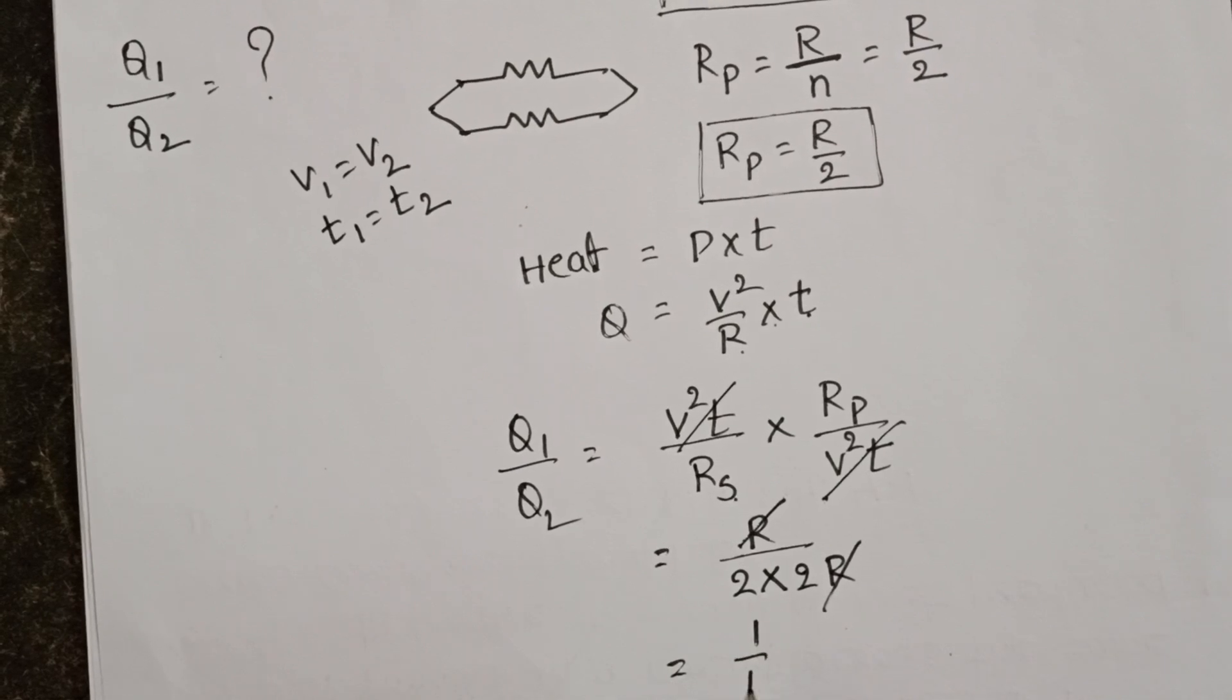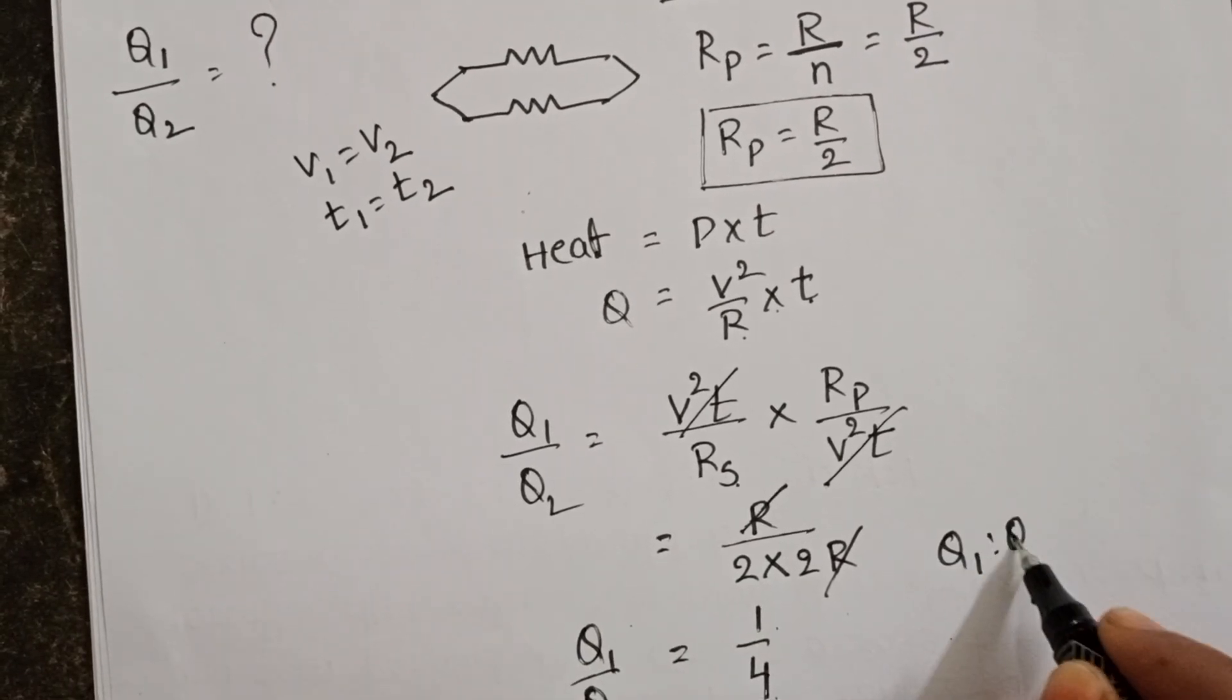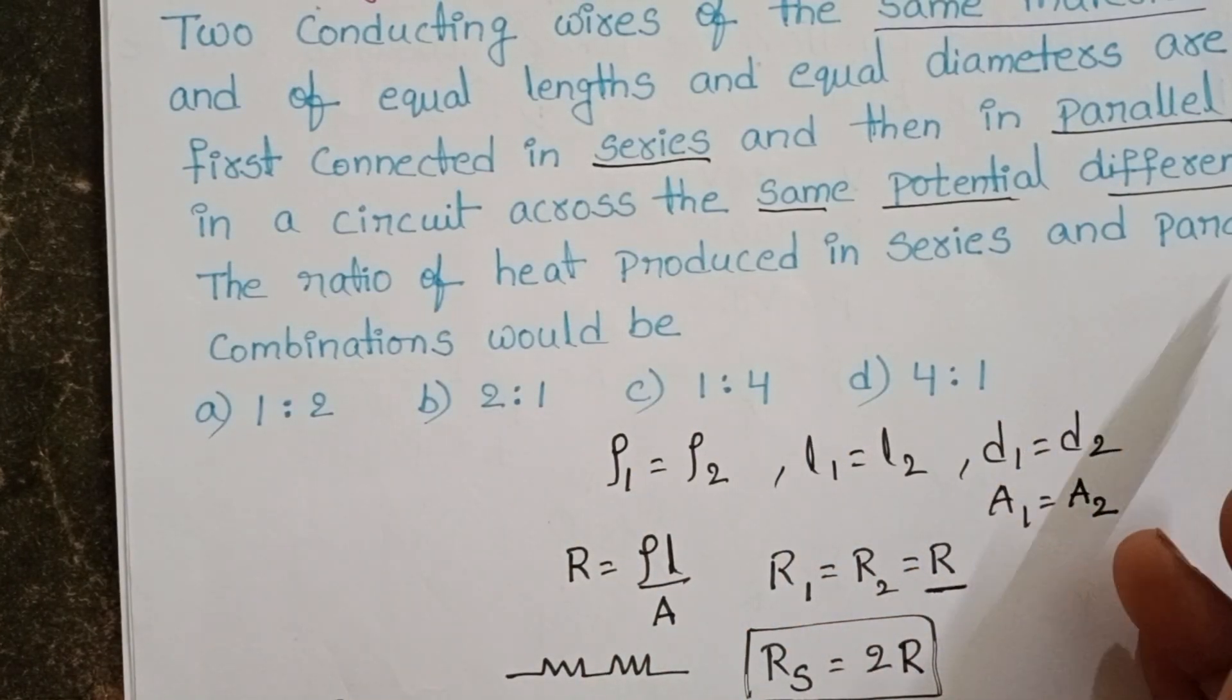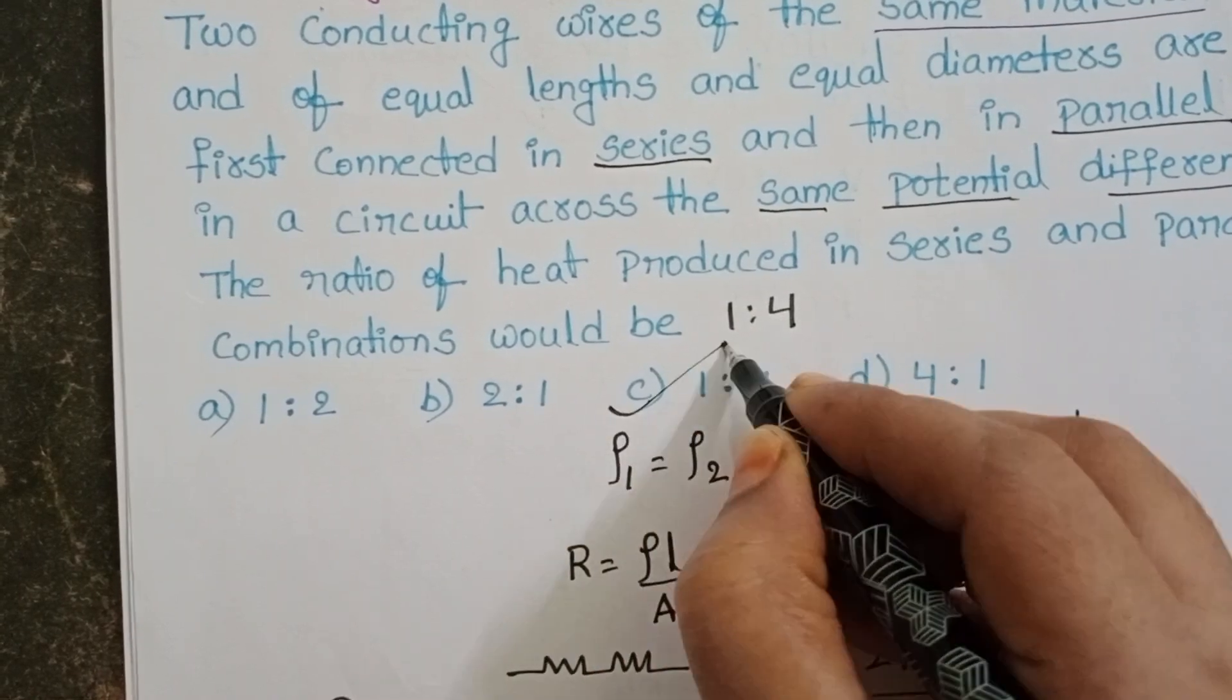That equals 1 by 4. Q1 to Q2 equals 1 to 4. The ratio of heat produced in series and parallel combinations is 1 to 4. Third option is correct.